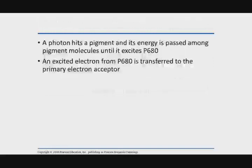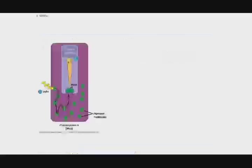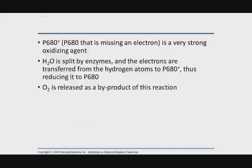Let's walk through the process, starting with a photon that hits a pigment. Its energy is passed along to the special pair in photosystem II, the P680. That P680 electron is transferred to what's called a primary electron acceptor in photosystem II. The key to this is that when I rip an electron away from P680, it's been oxidized.